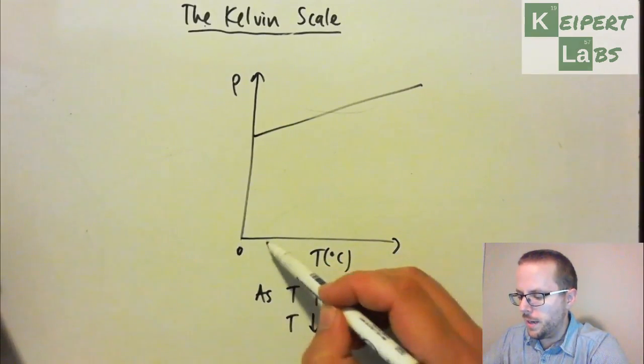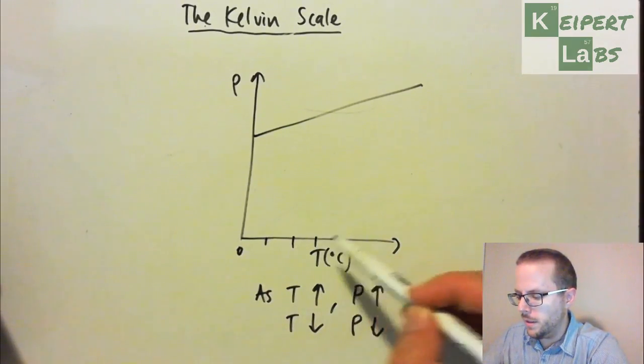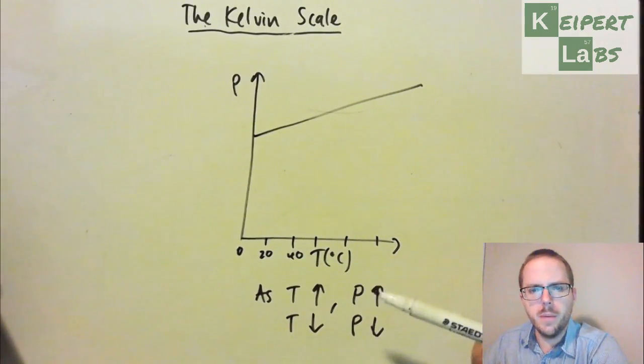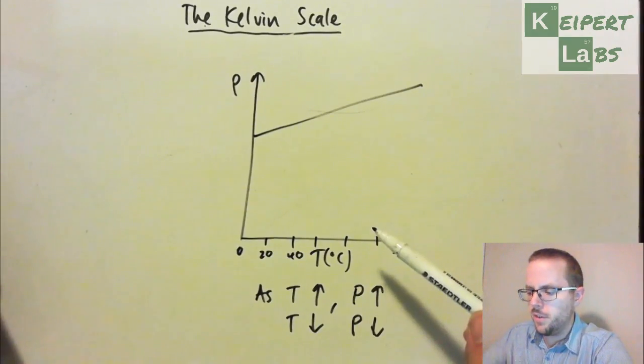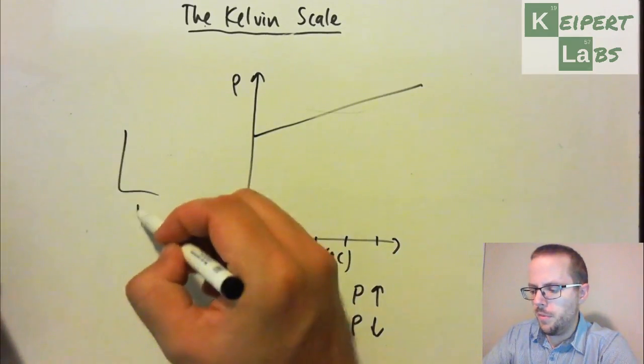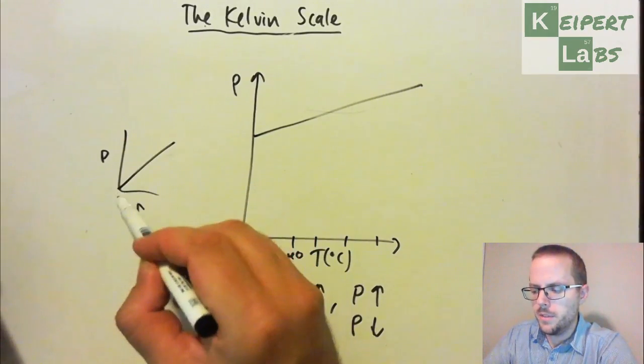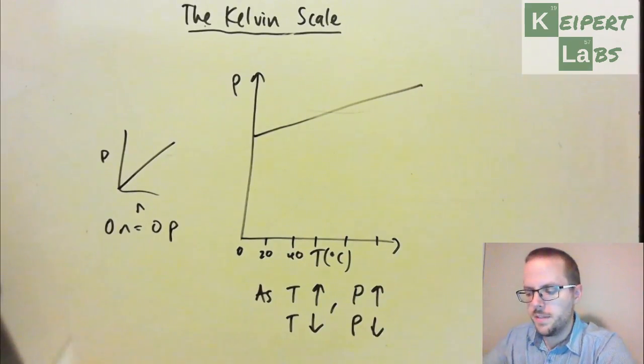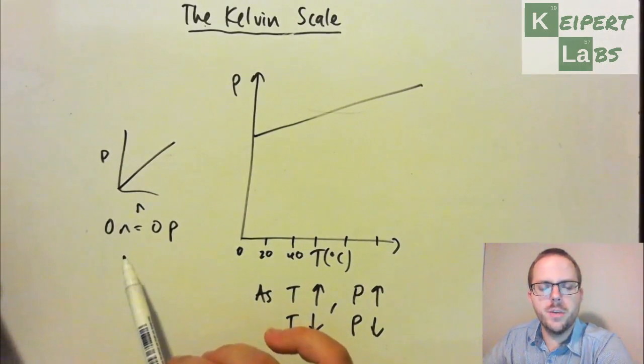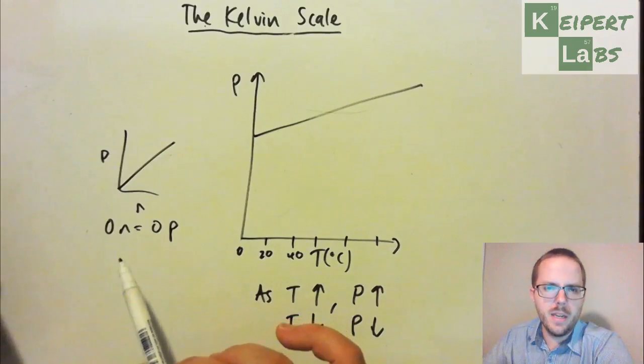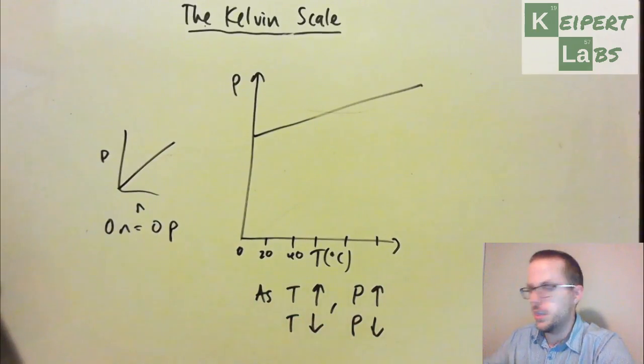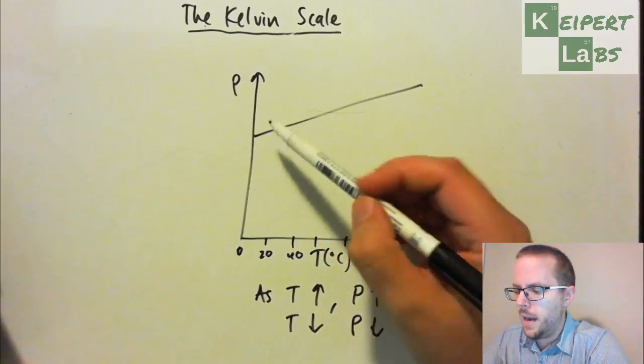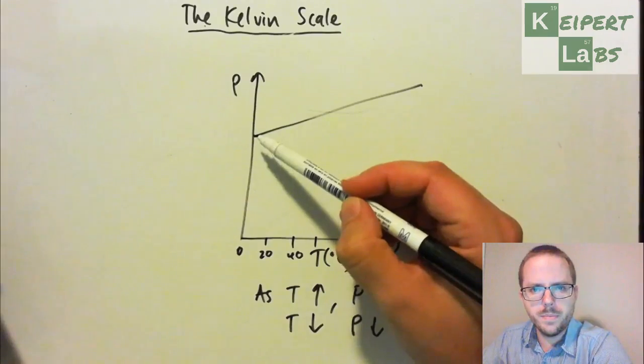But now, we had maybe 20, 40, 60, 80, 100 going along here. But then what we saw is that in the previous graph where we had number of particles versus pressure, that zero particles equals zero pressure, which makes sense when we define pressure in terms of collisions of the particles with their container. It's logical that if there's no particles, there should be no pressure. So that's why our line goes to zero and zero. But here, our line is not zero, zero. We have a y-intercept.